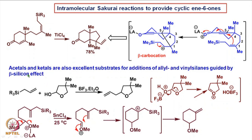It is also found that acetals and ketals are excellent substrates on which allyl- and vinylsilanes can be added, guided by the beta-silicon effect. If we take a hemiacetal and react with BF3 etherate in the presence of an allylsilane, this allylated product is formed. The reaction proceeds by the hydroxy group coordinating with the Lewis acid to form the oxonium ion, to which the allylsilane adds, giving the allylated product guided by the beta-silicon effect.